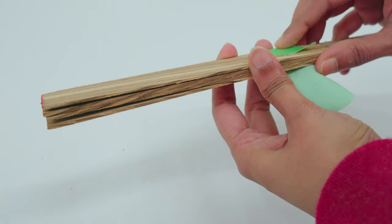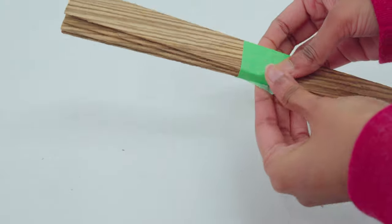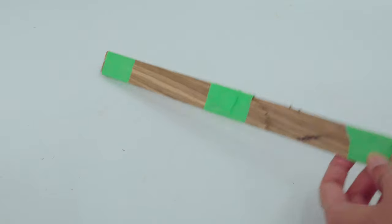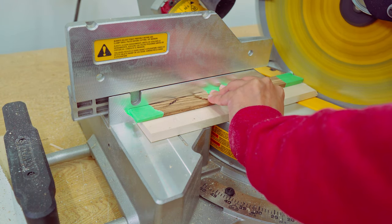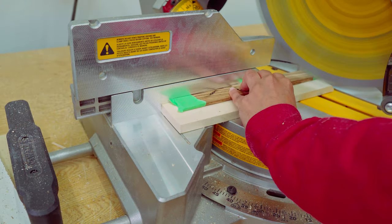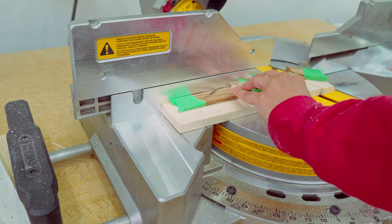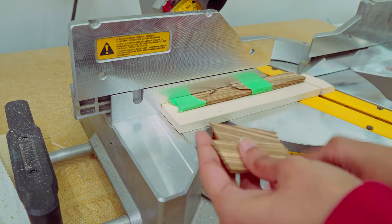Next, stack the strips and tape them together. Set the miter saw to 22 and a half degree angle and cut the edge off. Then determine the length of the earring you want and cut. I chose 2 inches. You can make several cuts like this depending upon the number of earrings you want to make.